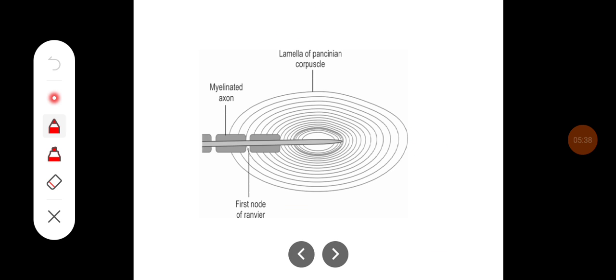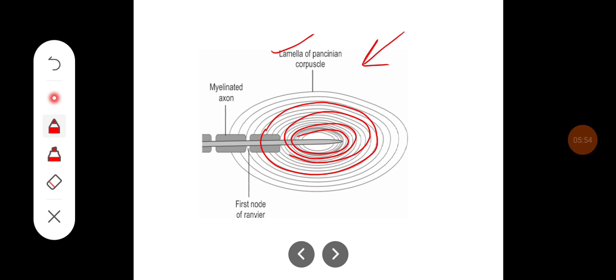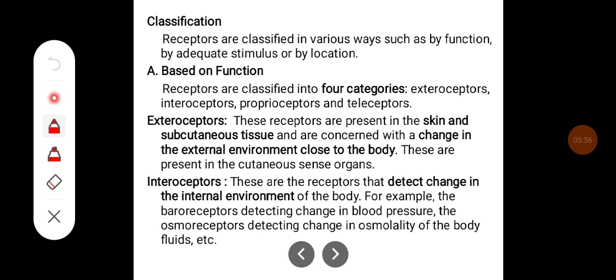Here is an example of one receptor — the Pacinian corpuscle. In the Pacinian corpuscle, the neuron ending is modified and you can see the multiple lamellae. Receptors are classified in various ways: by function, by adequate stimulus, or by location.